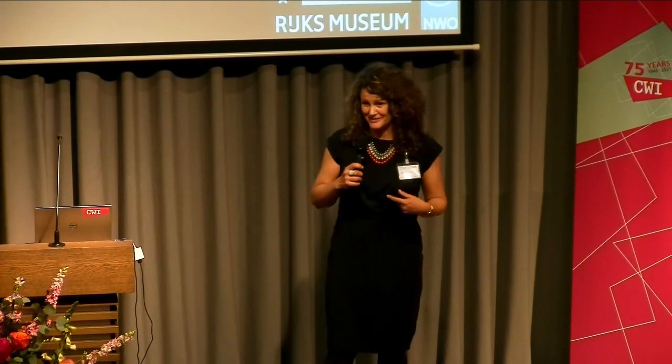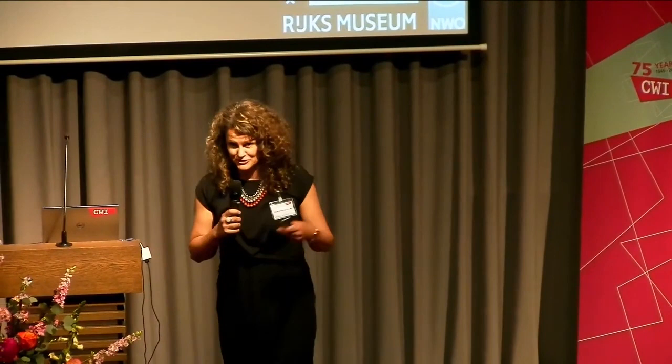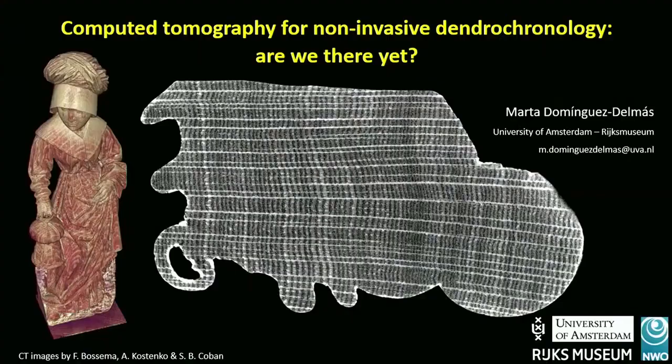The first time I showed this image at a dendro conference it was on a plenary session — my keynote lecture — and there were more than 200 people there, and there was this very loud 'wow.' Because this is a dendrographic cross-section of that little sculpture that Felix showed before, and what we can see here is the wood structure: the macro structure — vessels, rays, late wood — and we see perfectly all the tree ring boundaries. This is a dream come true for dendrochronologists, especially dendroarchaeologists.